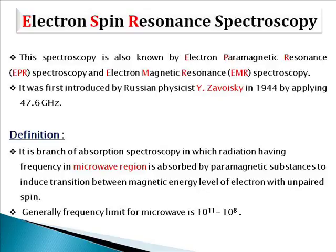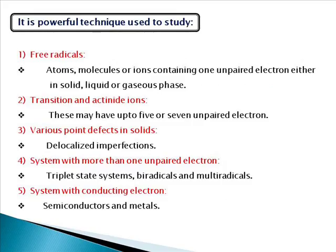The frequency limit for microwaves is generally 10⁻¹¹ to 10⁻⁸ Hz. ESR spectroscopy is useful only for paramagnetic substances. It is a powerful technique used to study free radicals, atoms, ions, or molecules containing one unpaired electron either in solid or liquid phase. It is also used to study transition and actinide ions — D-block or F-block elements — which may have up to 5 or 7 unpaired electrons.